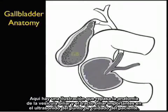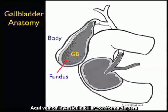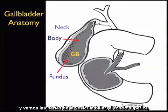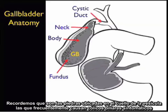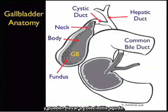Here's an illustration reviewing the anatomy of the gallbladder and biliary tracts important to bedside sonography. We see the gallbladder shaped as a pear-like structure with its parts: the upper fundus, the intermediate body, and the neck towards the top of the image. Recall that impacted stones at the neck of the gallbladder often cause symptomatic biliary colic and can lead to acute cholecystitis.